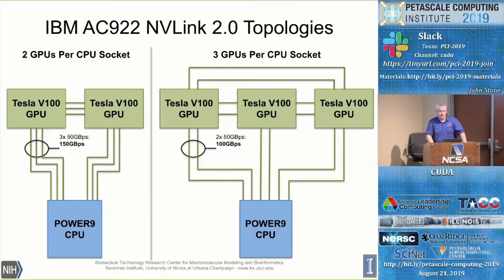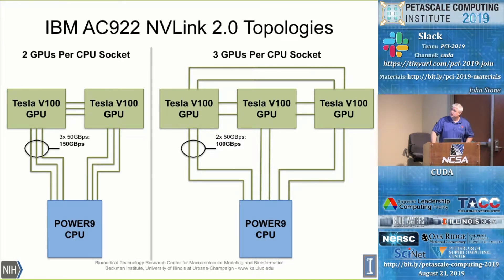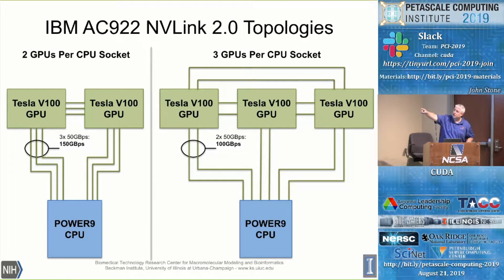Since there were questions about it this morning, I added slides showing the NVLink topology on the Livermore Sierra machine and the Oak Ridge Summit machine. I may have misstated some numbers this morning — Sierra is actually 150 gigabytes per second, not 200, and Summit is actually 100, not 150. On Sierra you have three NVLink links per card at 50 gigabytes per second each, giving 150. On Summit you have two links per card.